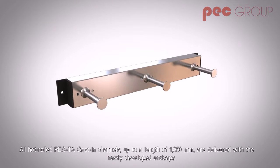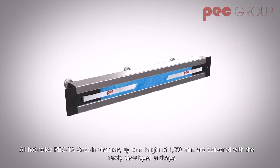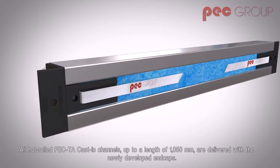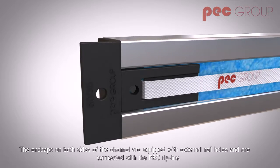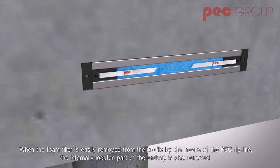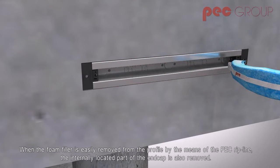All hot rolled PEC-TA cast-in channels up to a length of 1050 mm are delivered with the newly developed end caps. The end caps on both sides of the channel are equipped with external nail holes and are connected with the PEC rip line. When the foam filler is easily removed from the profile by means of the PEC rip line, the internally located part of the end cap is also removed.